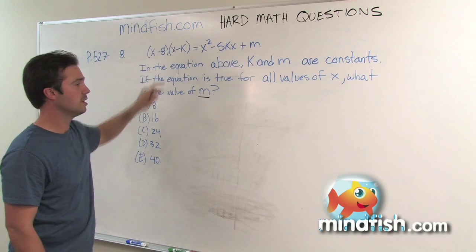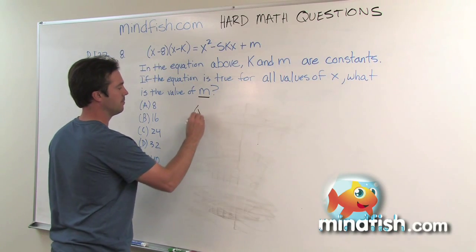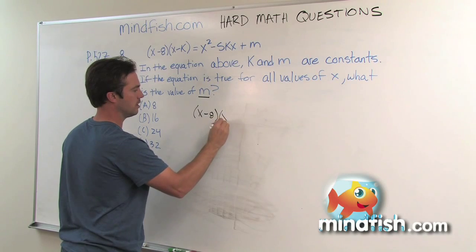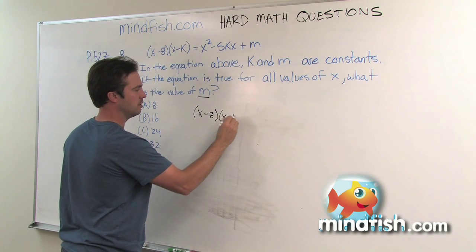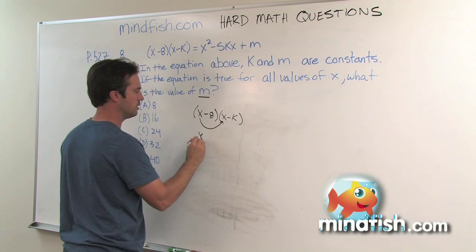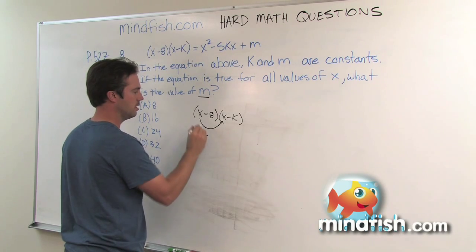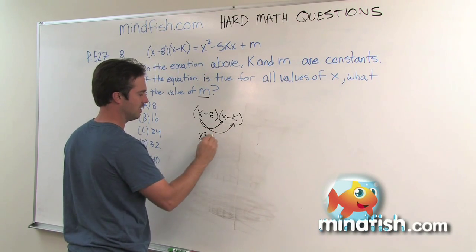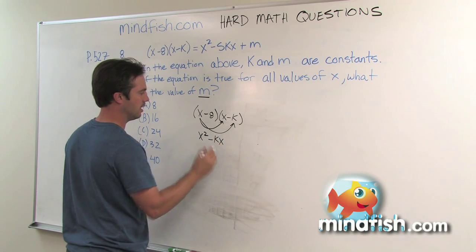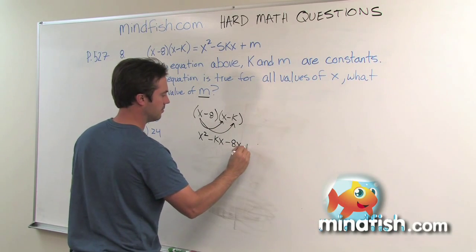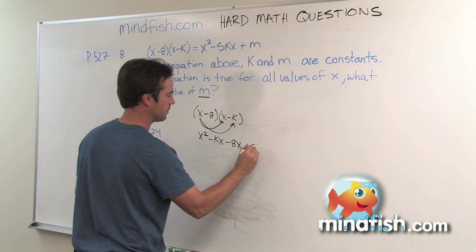The first thing I'm going to do is foil the left side. If you remember FOIL — first, outside, inside, last — we're going to go k times k, which is k squared. Then k times negative x, which gives us negative kx. Then negative eight times x, and then negative eight times k.